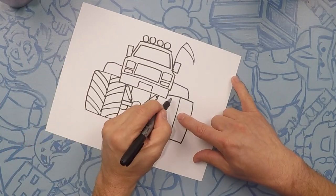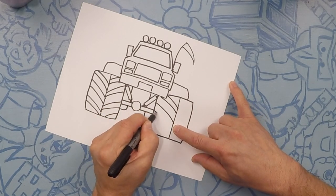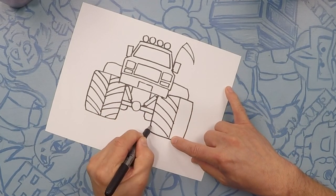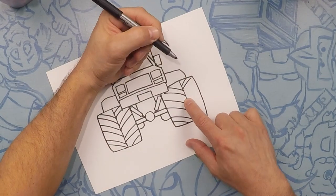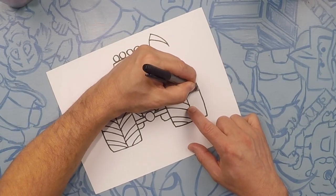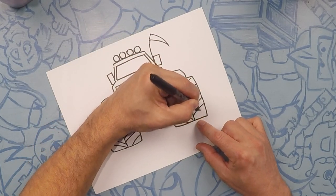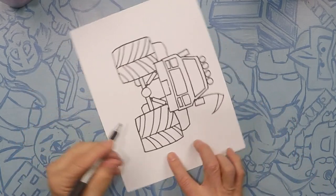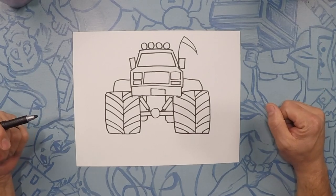So the same thing on this side. Two at a time. One, two. One, two. One, two. And on this side, in between, on the in-betweens. Maybe one more. Perfect. So there's our monster truck and let's color.